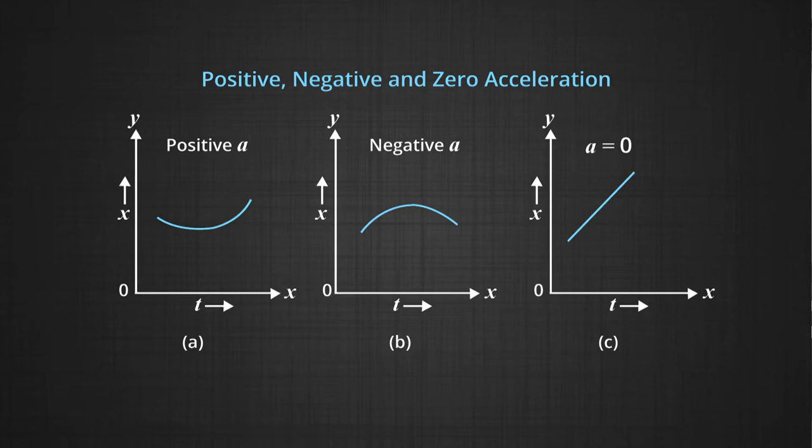Velocity as given by the tangent drawn to this curve. Similarly, if we considered the second graph, which is your graph B, you notice the position time graph to have a curve with its curvature in such a way that the center of curvature would lie below the curve. Also notice that if we were to consider tangent at individual points along the curve, this value will show that the slope of the line is becoming lesser and lesser. That slope was indicative of the velocity. And if this velocity is decreasing, that means the acceleration is negative, which we sometimes call retardation or deceleration.